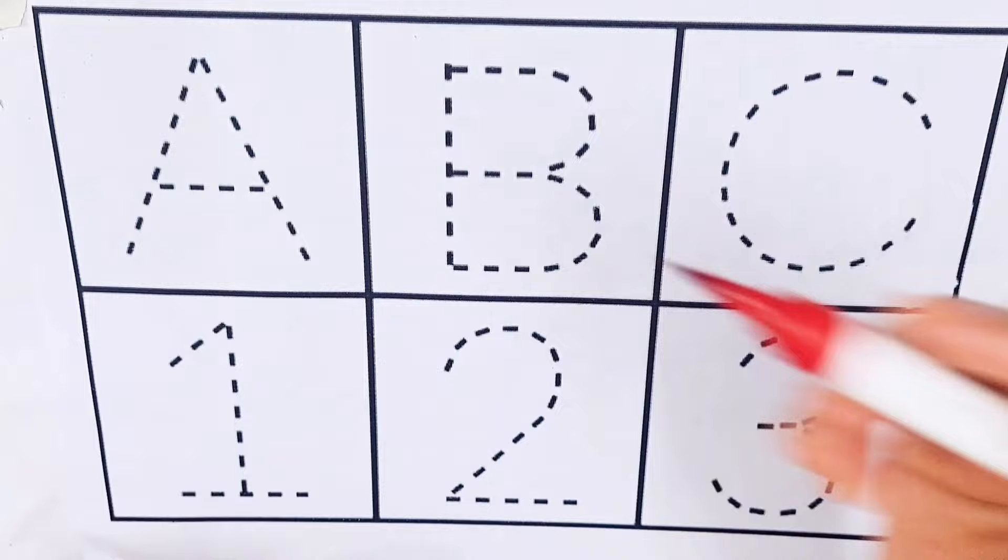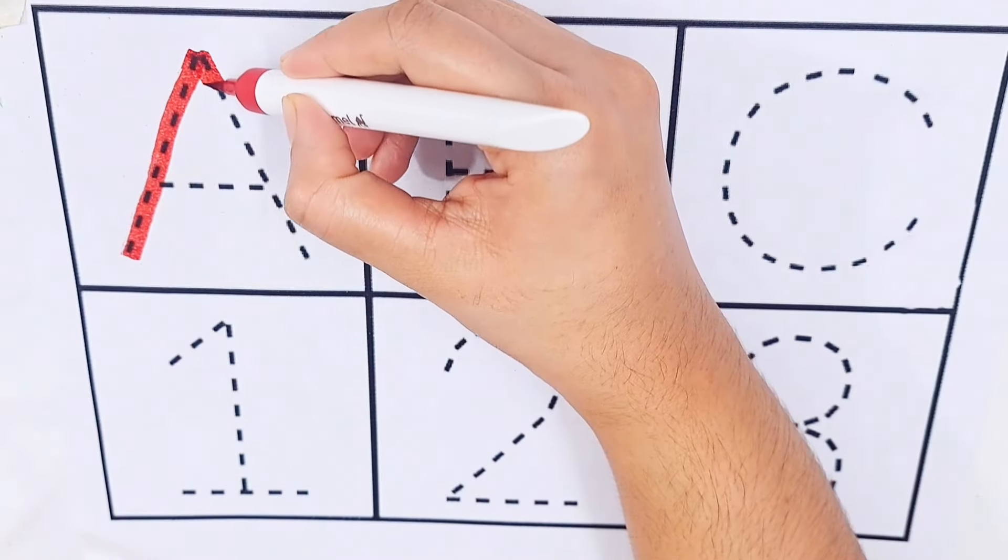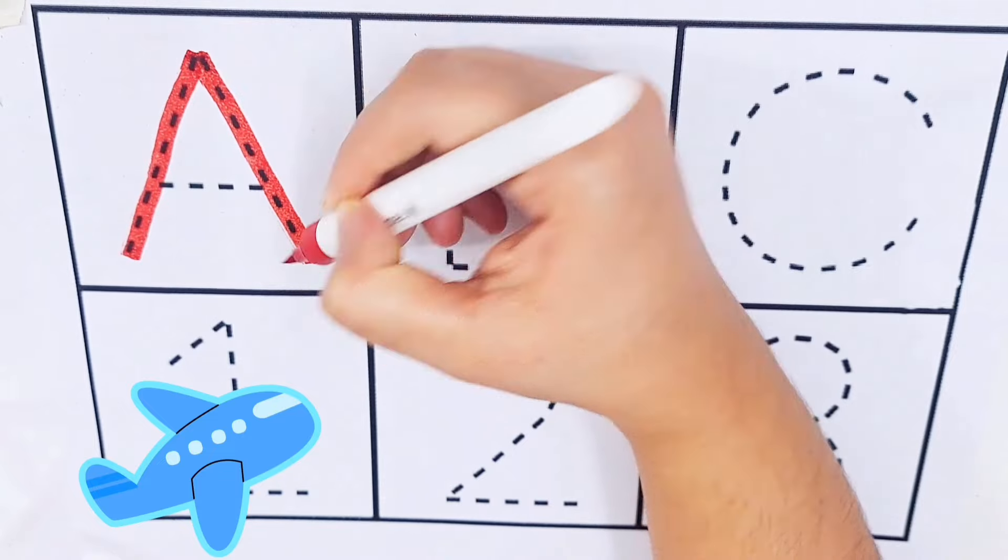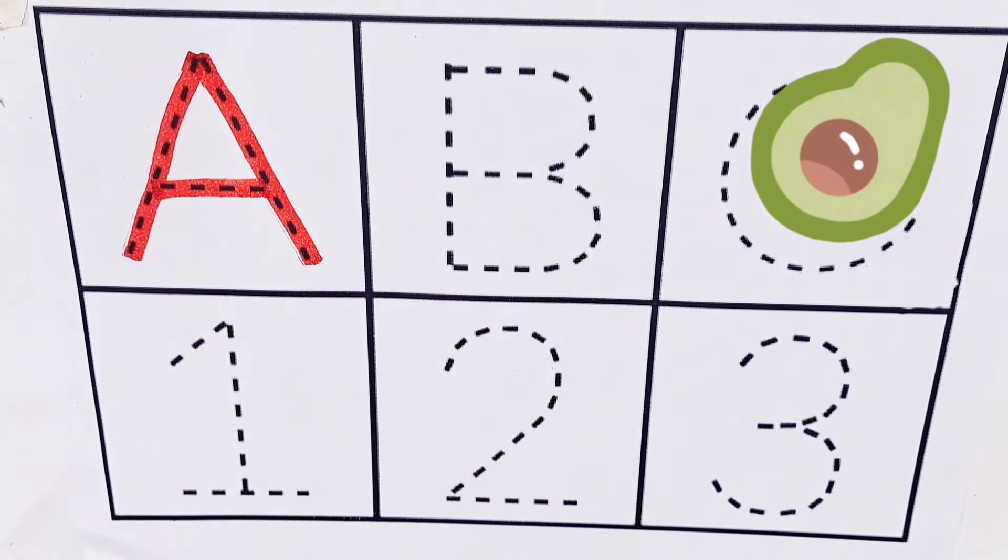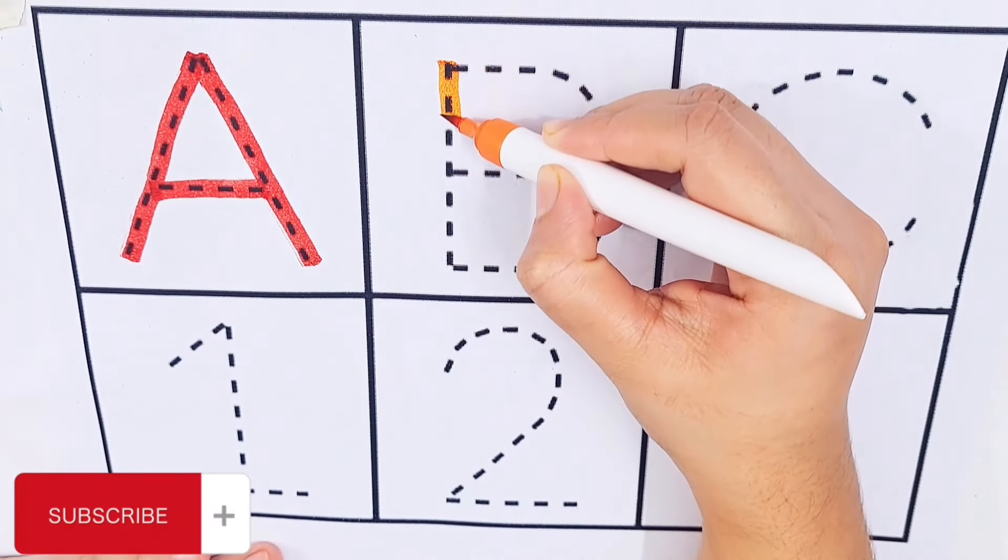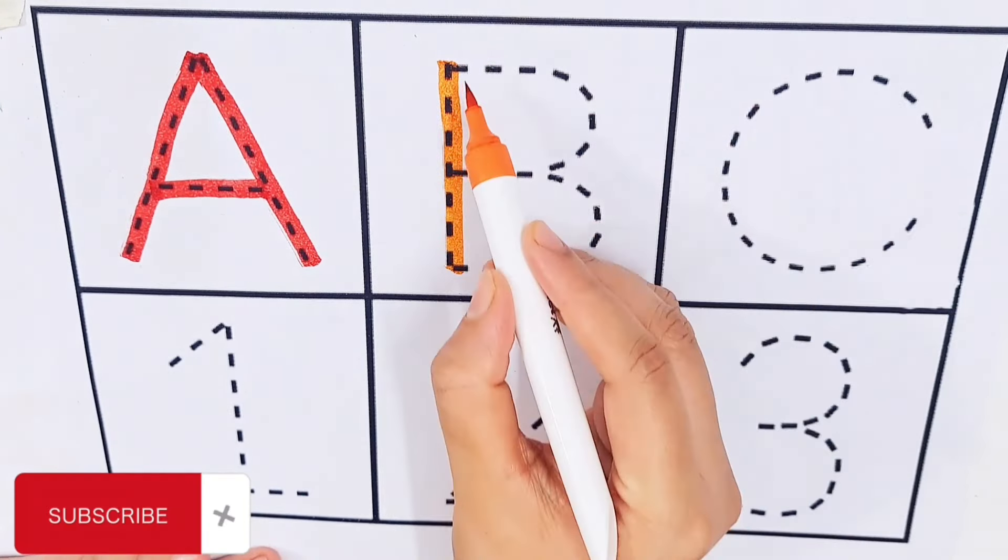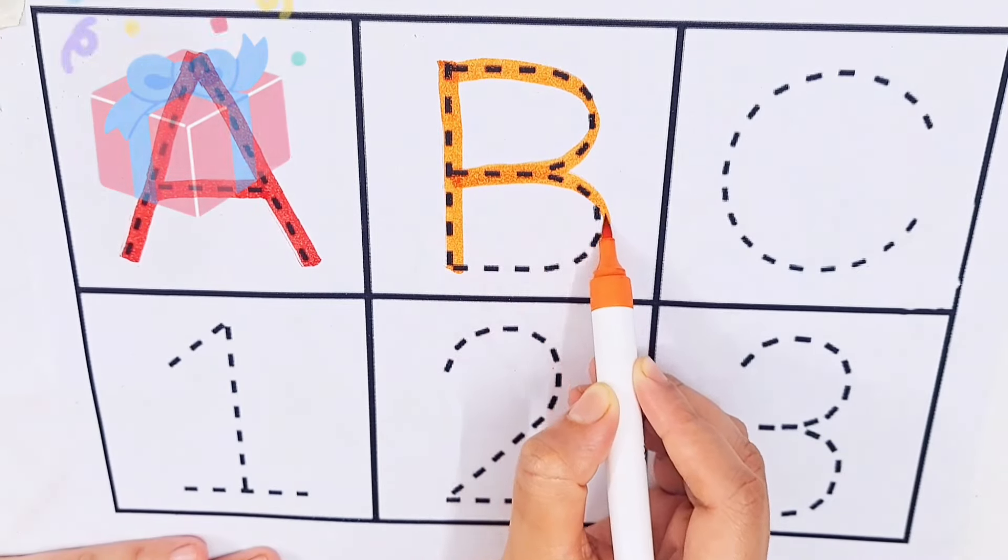Red color. A, A for aeroplane. A for avocado. Orange color. B, B for books. B for box.